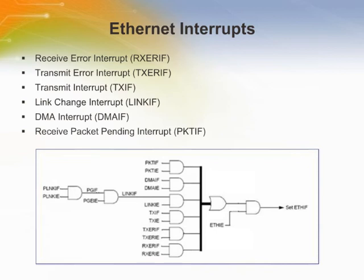The Ethernet module can generate multiple interrupt conditions. To accommodate all of these sources, the module has its own interrupt logic structure similar to that of the microcontroller. Separate sets of registers are used to enable and flag different interrupt conditions. The EIE register contains the individual interrupt enable bits for each source, while the EIR register contains the corresponding interrupt flag bits. When an interrupt occurs, the interrupt flag is set.